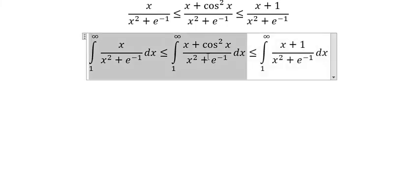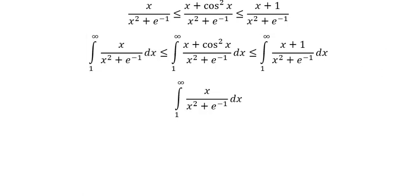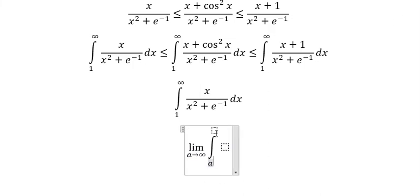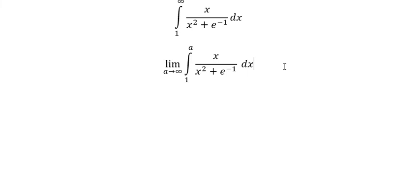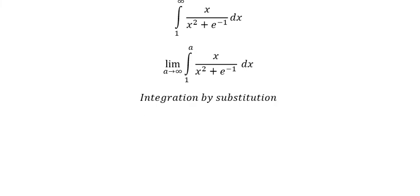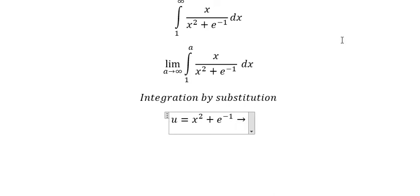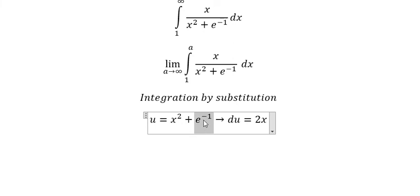Now I need to concentrate on this integral. I will take the limit as a approaches positive infinity, with the integral from one to a. We can use integration by substitution. Let u equal s squared plus e to the power of negative one. We take the first derivative of both sides. The constant gives zero.